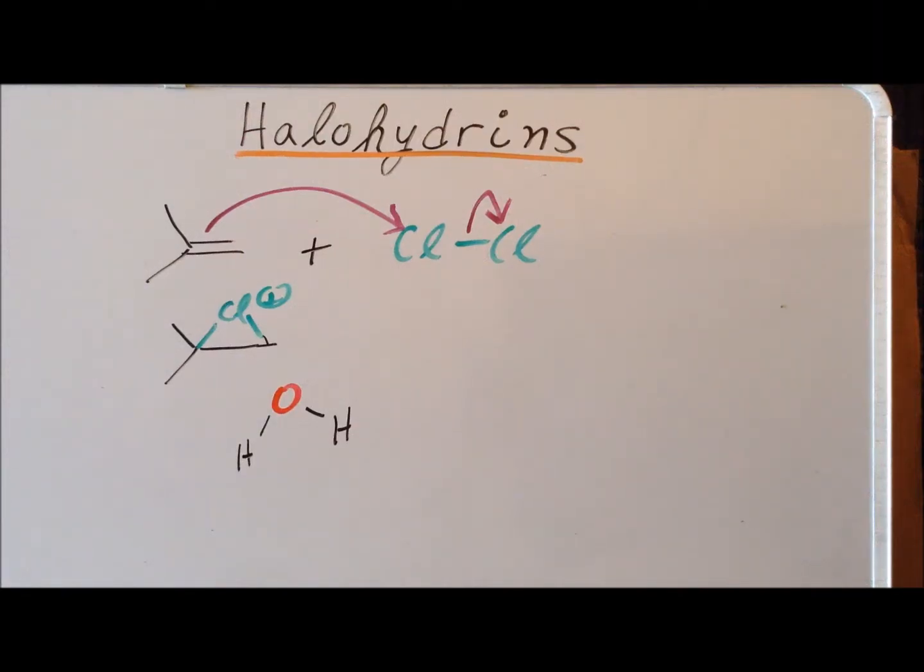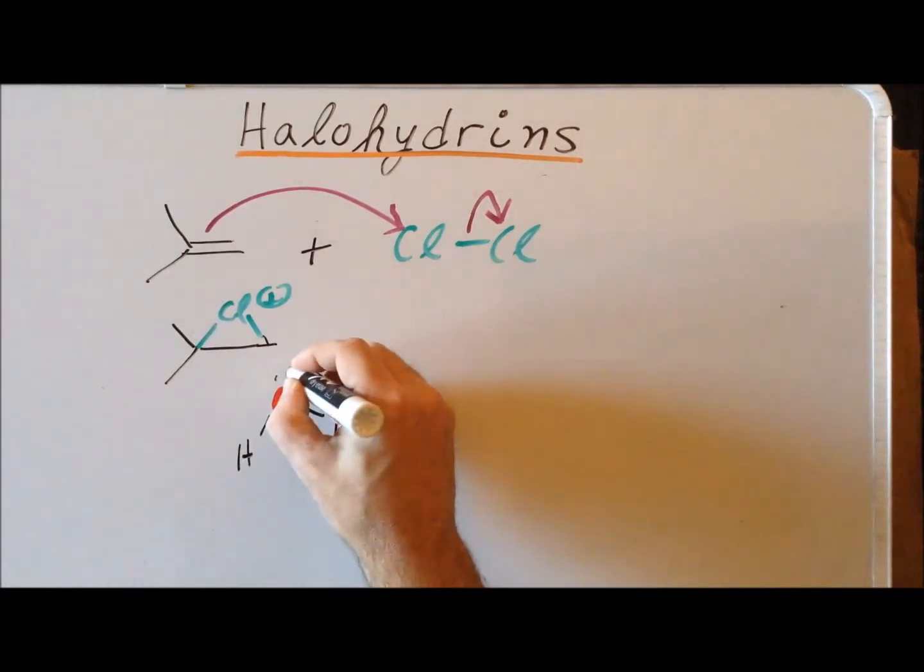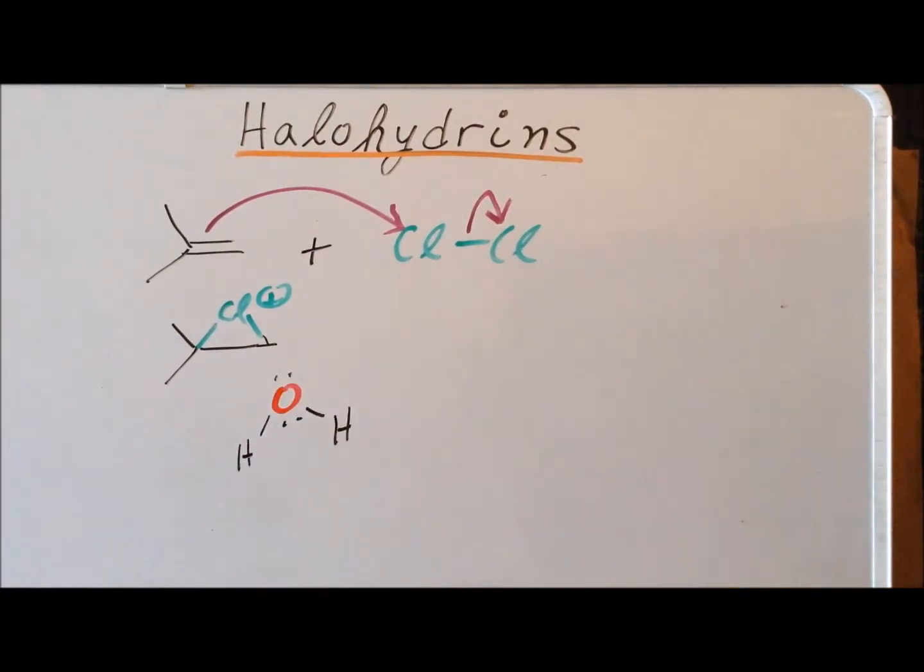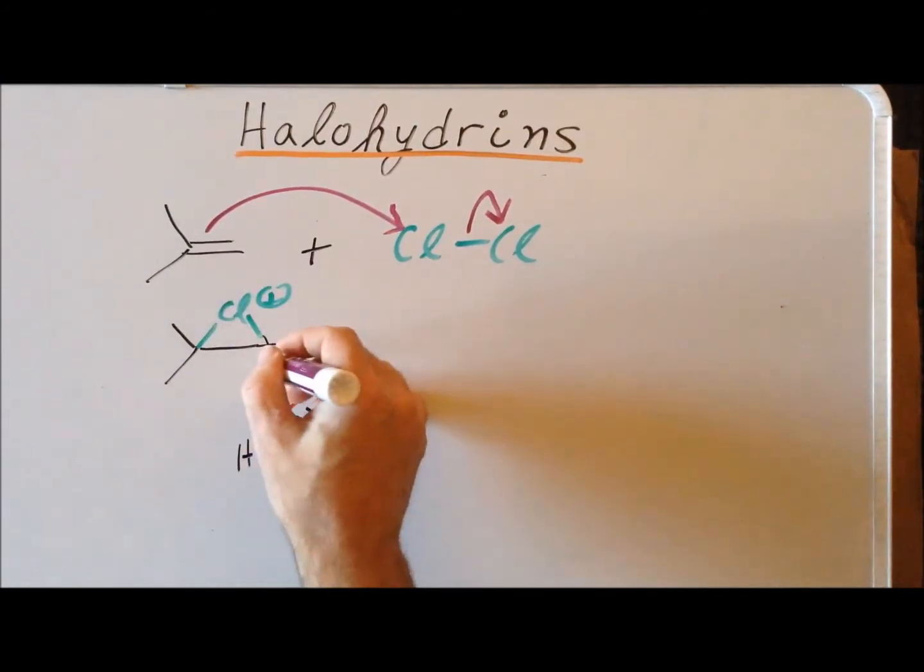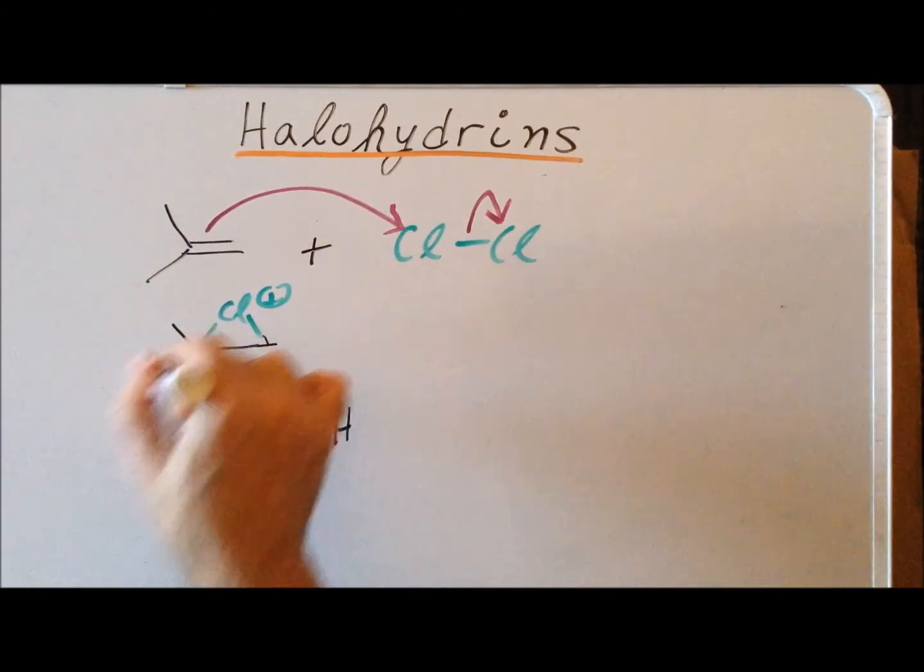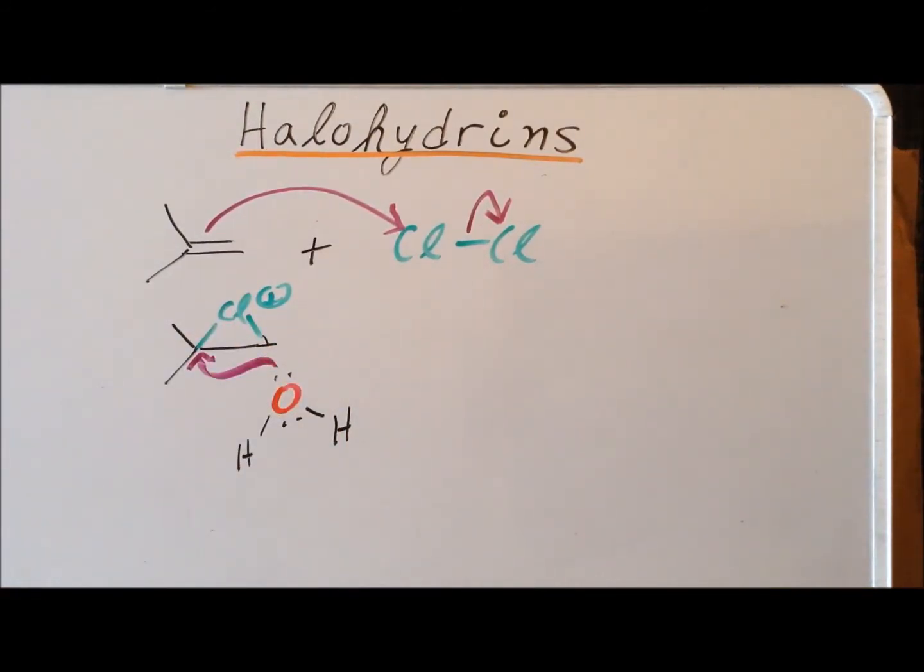In the next step, we have a nucleophilic attack of water in an anti-orientation to the three-membered chloronium ion. And it's going to go to this particular carbon, the most highly substituted carbon, because in the process, we have the intermediate formation of a tertiary carbocation, which, as we know, is far more stable than a primary carbocation. So this is application of Markovnikov's rule.